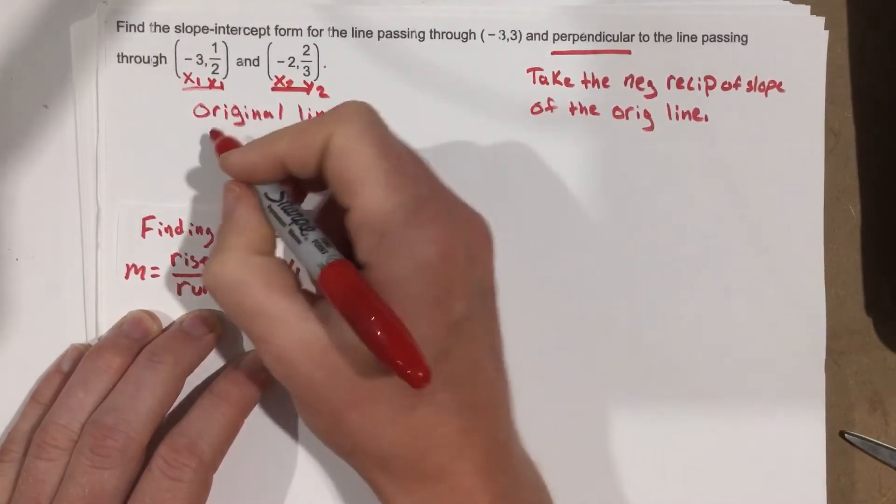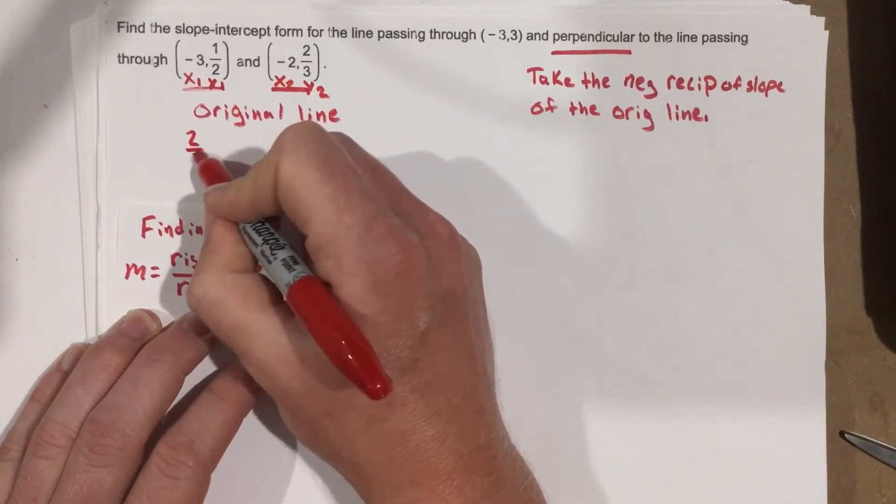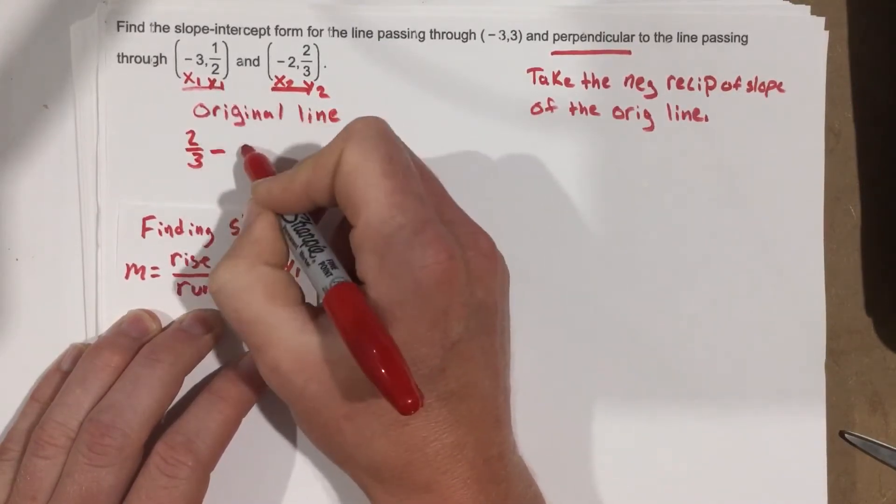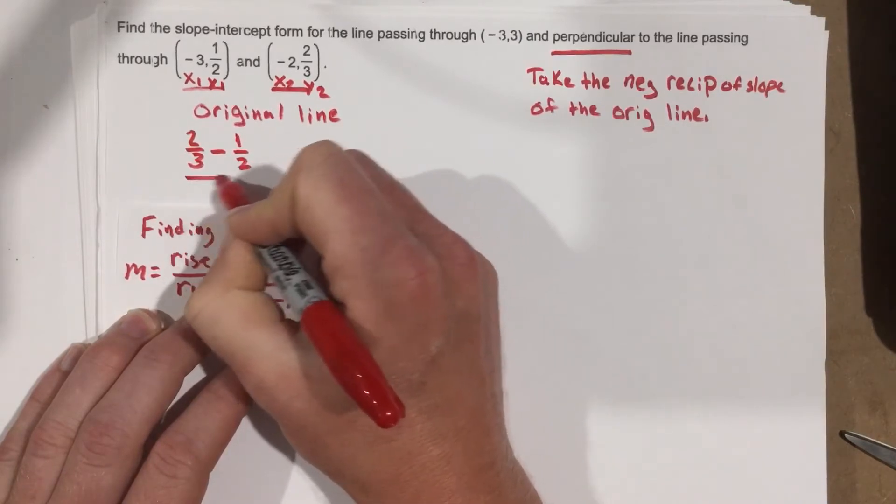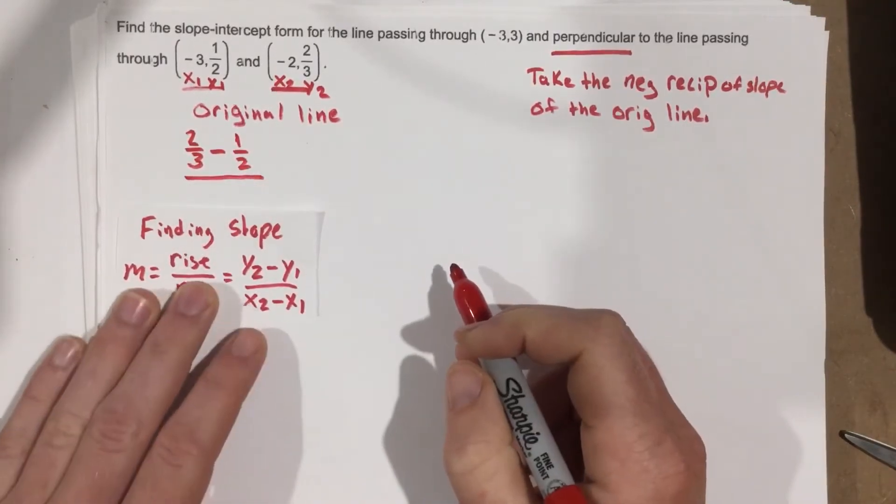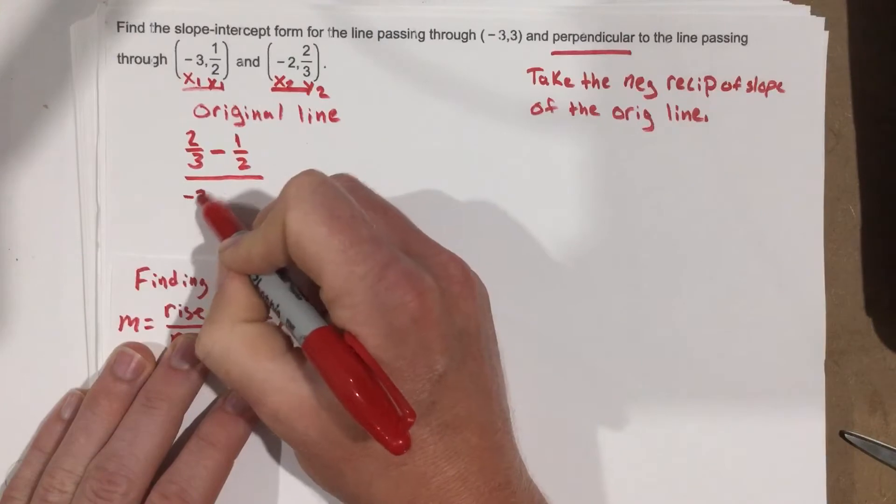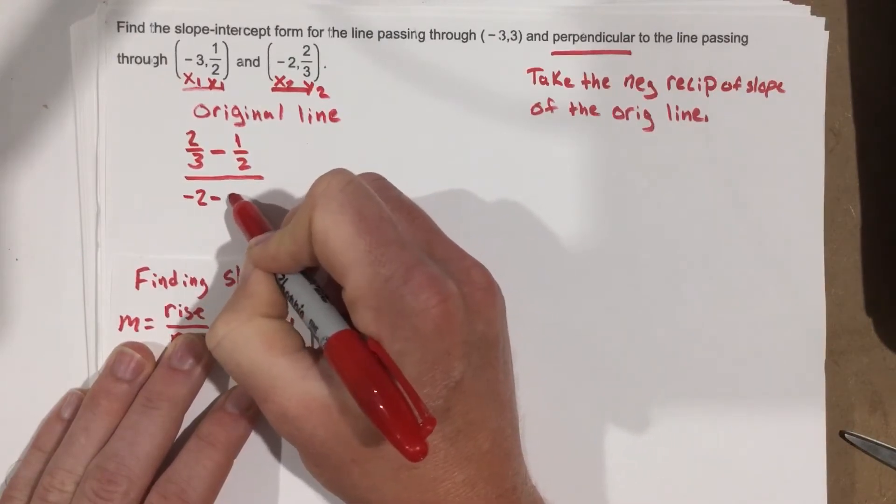So y₂ is going to be 2/3. So we're going to say 2/3 minus y₁, which is 1/2, over x₂, which is negative 2, minus x₁, which is negative 3.